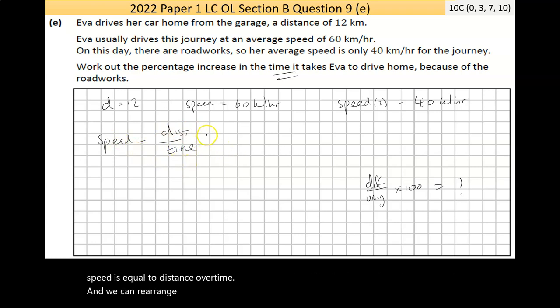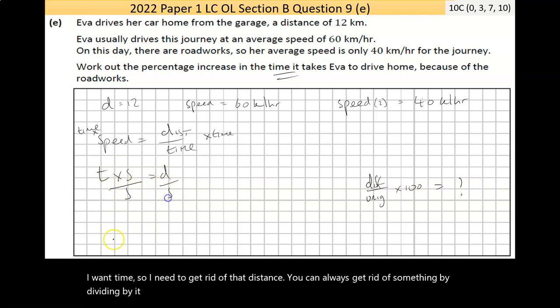It says work out the percentage increase in the time it takes Ava to drive home because of the roadblocks. The classic equation here would be speed is equal to distance over time. We can rearrange that by multiplying by time. If I multiply it by time on the far side, I'll have to do it here. So it'll end up with T times S is equal to D. I want time, so I need to get rid of that distance. If I do it one side, I have to do it both. It'll end up with time is equal to distance over speed.